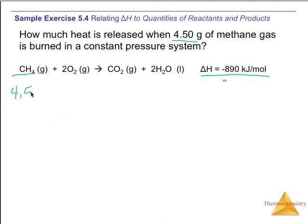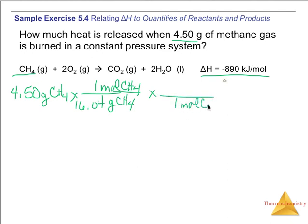4.50 grams of methane times grams of methane in one mole of methane. Just our molar mass 16.04 times for every one mole of CH4 I'm going to release 890 kilojoules. So, doing the math on the calculator 4.5 divided by 16.04 times 890 I would get a release of 250 kilojoules.